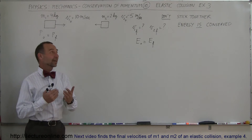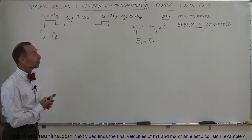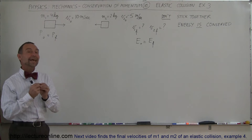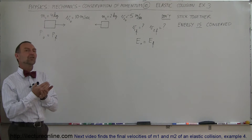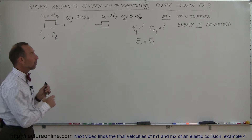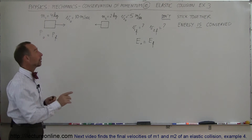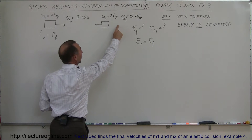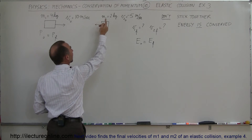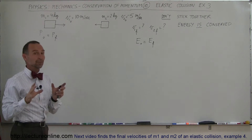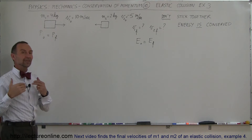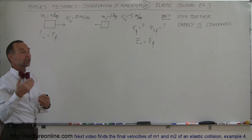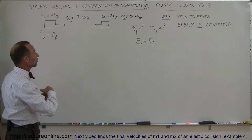Welcome to our lecture. In this example we're dealing with conservation of momentum where both objects do not stick together after the collision and energy is conserved. Compared to the previous problem, instead of the second object moving to the right at five meters per second, this one moves to the left at minus five meters per second. Remember, with momentum these are vector quantities and we have to take into account direction — positive or negative.